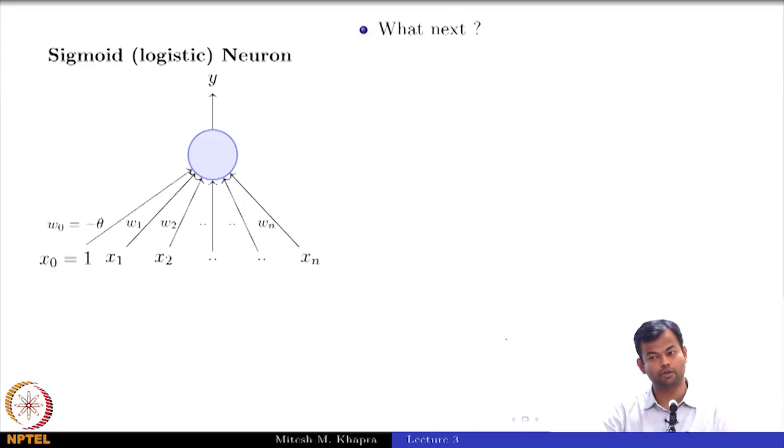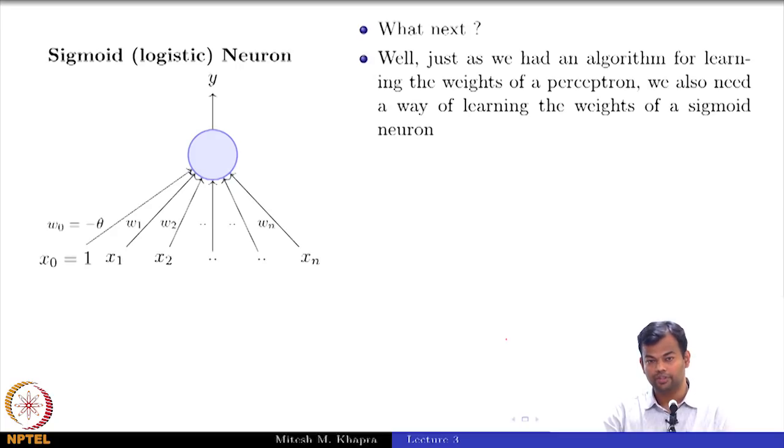Where do we go from here? What is my next topic going to be? Yes, a lot of you are giving the right answers. We need to learn these weights. It does not help just to define the function. This function depends on certain weights and now I need to give you an algorithm which will help you to learn these weights. Now, remember when I talked about perceptrons, before giving you an algorithm, what did I revisit? What did I talk about? The error surfaces, right?